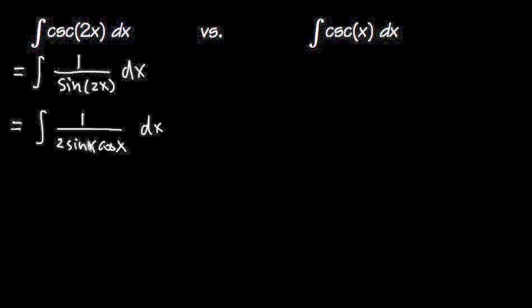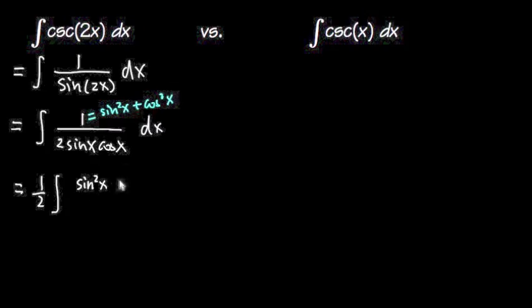I'm going to use another trig identity, another famous one. Sine square x plus cosine square x is equal to 1. So I'm still working with sine and cosine. And then I'm going to replace this 1 with sine square x plus cosine square x. I'm going to change this 1 over 2, let me take the 1 half to the front of the integral. And then on the top, I have sine square x plus cosine square x all over sine x times cosine x like this dx.